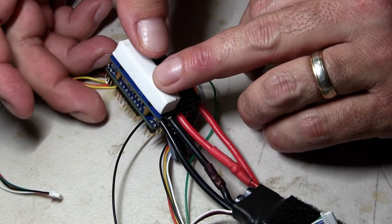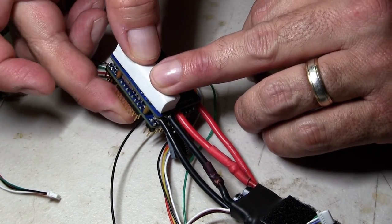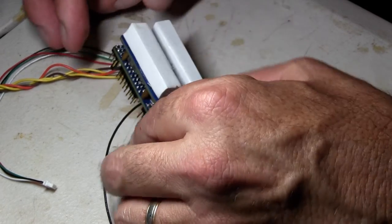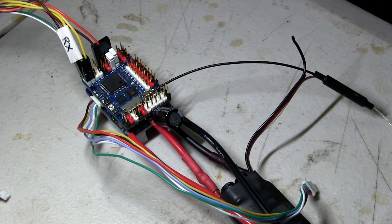Then I glue the vibration dampening to the bottom of the flight controller using hot glue. I'm just using foam here. I am going to change this though because it sits too high.